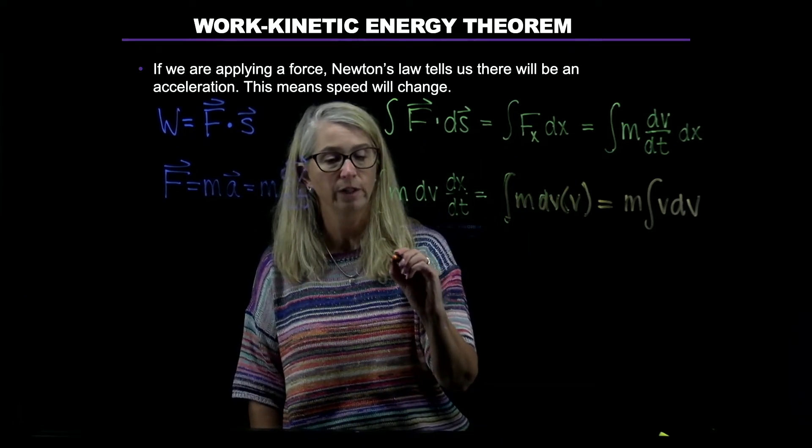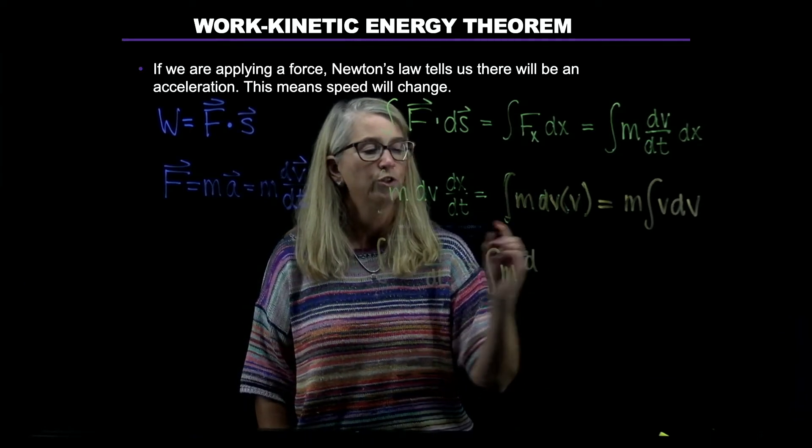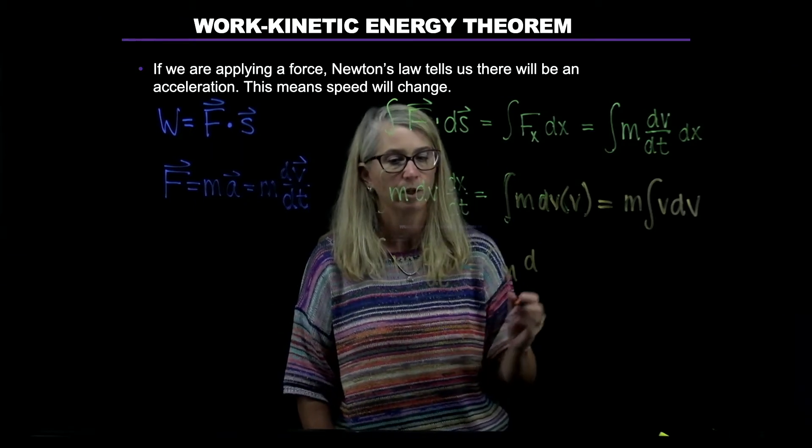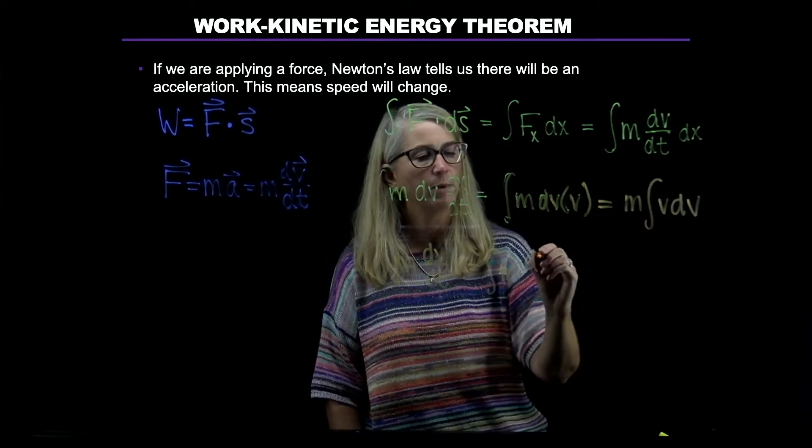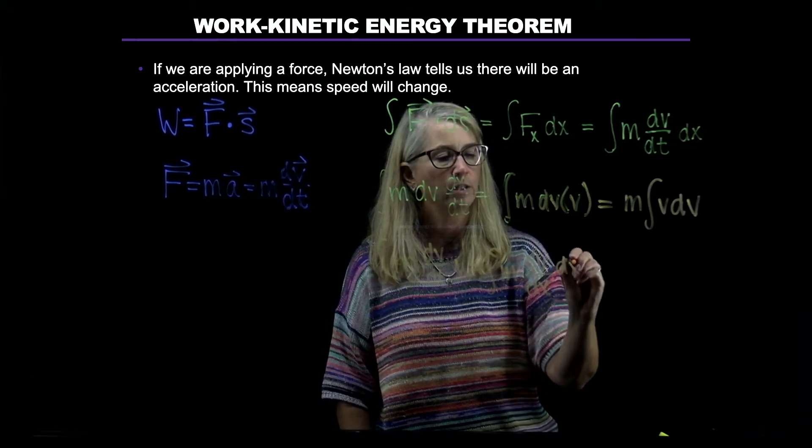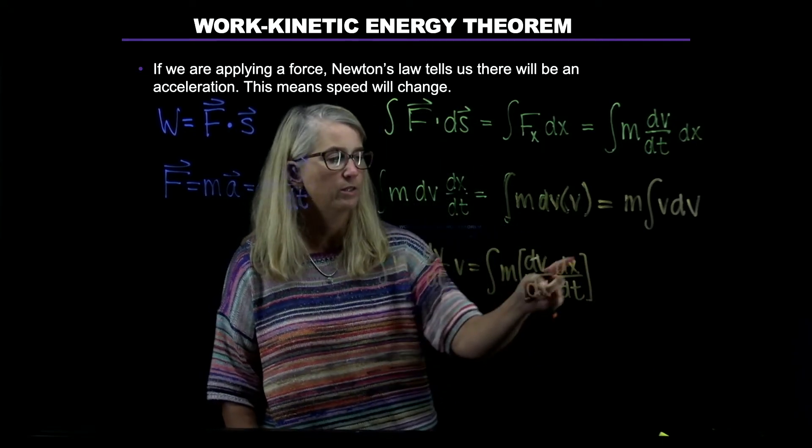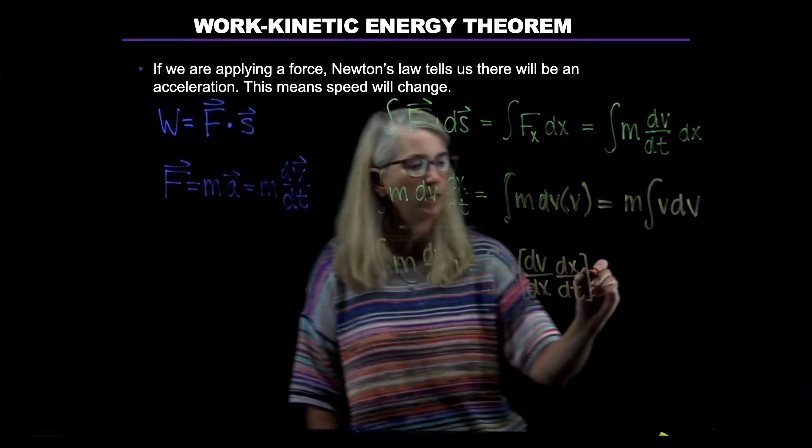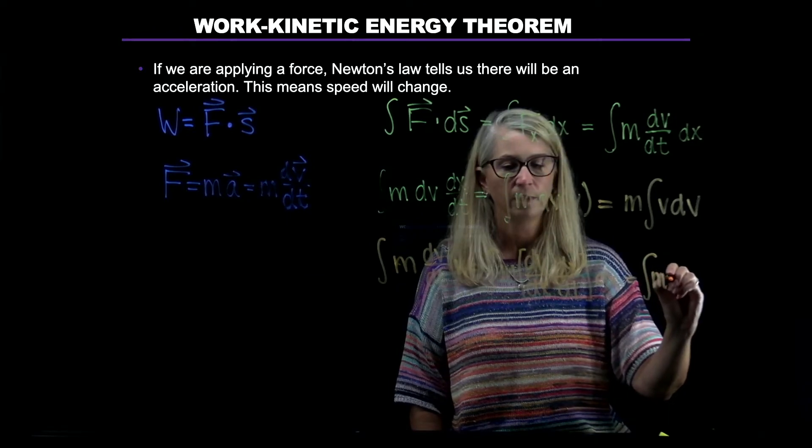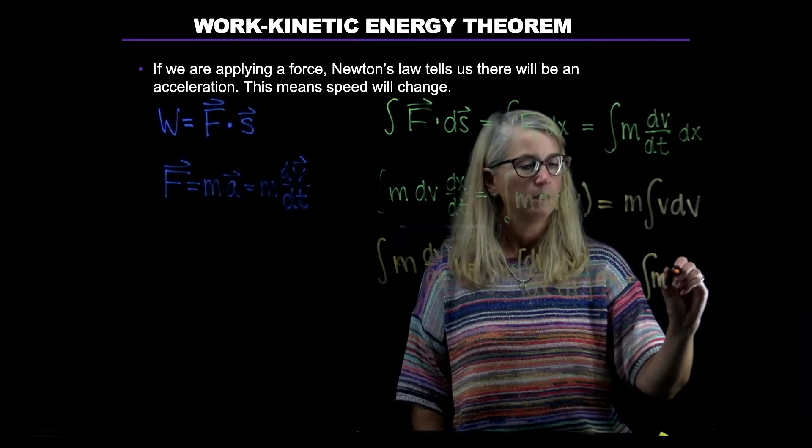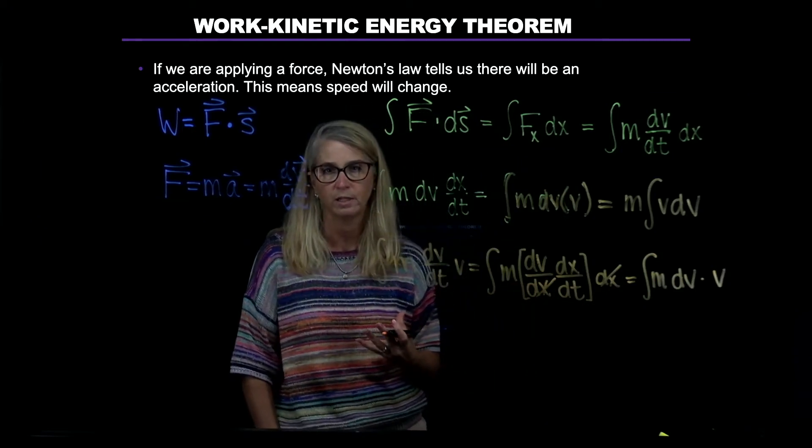The chain rule is useful when we want to make a change in variable. Instead of taking the derivative of velocity with respect to time, I can first take it with respect to x, and then multiply by dx/dt. These two terms together - you can imagine the dx's cancel out - give me dv/dt. We still have this dx, and what happens is we're left with the integral m times dv, because the dx's cancel out, and dx/dt is velocity. So we actually end up with the exact same thing.